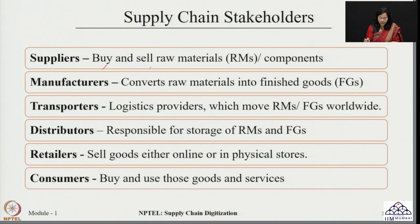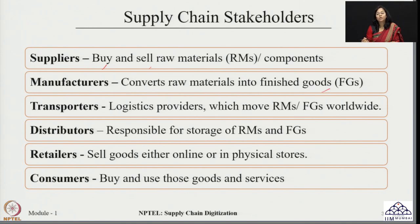The manufacturers are the players who convert the raw materials received from suppliers into finished goods. Manufacturing is a very broad area and involves different types of production processes for converting raw materials into finished goods. The next stakeholder in any supply chain is generally the transporters — the logistics providers — who are primarily responsible for moving these raw materials from suppliers to manufacturers, or once the manufacturer has made the final product, moving finished goods to other parts of the world.